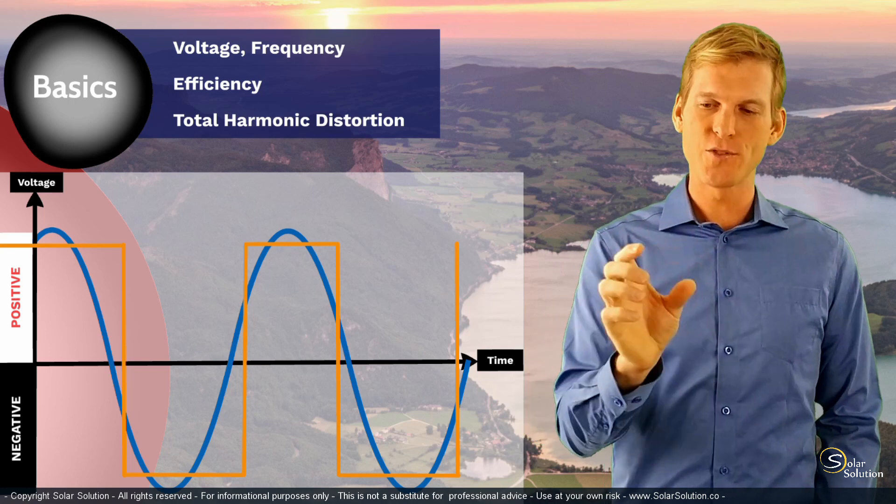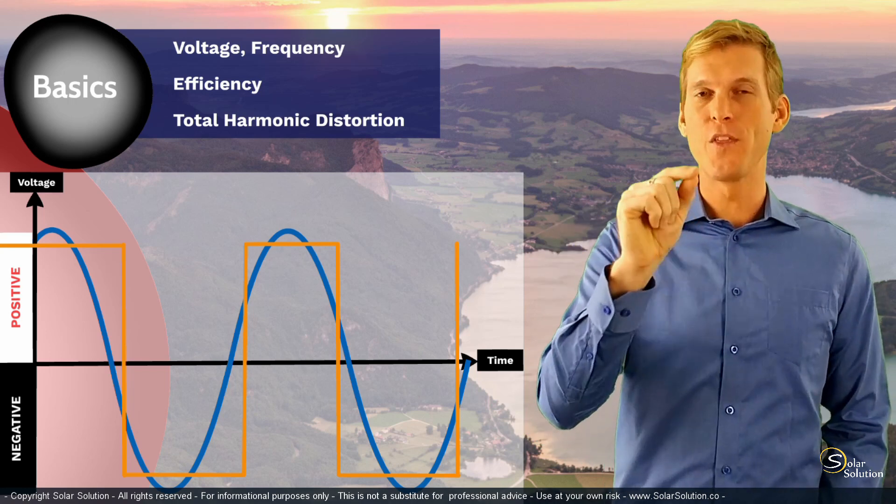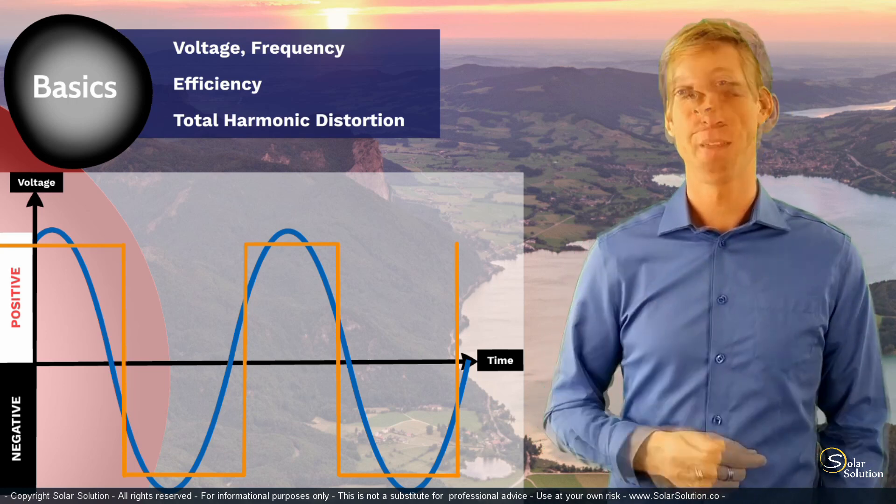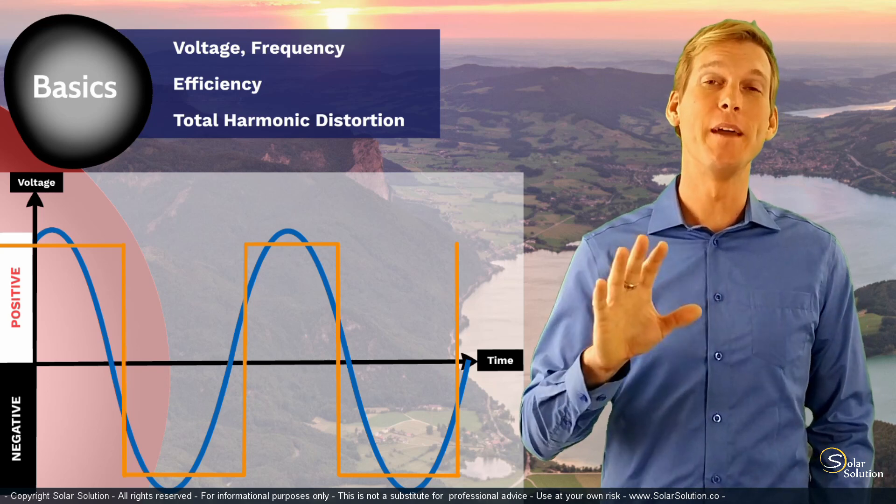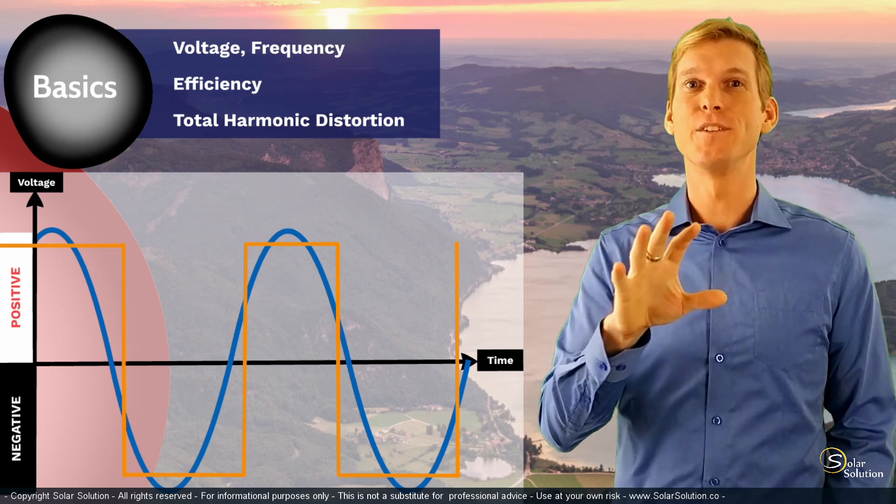The closer the output of your inverter resembles the waveform, the lower the total harmonic distortion is. The lower the THD, the better. I think that's all you need to know about the basics, so let's start to dig into the subtopics of the inverter chapter.